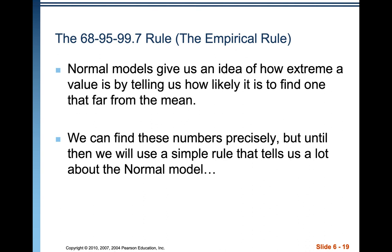The 68-95-99.7 rule, also known as the empirical rule: normal models give us an idea of how extreme a value is by telling us how likely it is to find one that far from the mean. We can find these numbers precisely, but until then we'll use a simple rule that tells us a lot about the normal model.